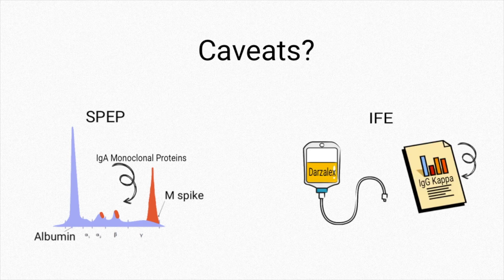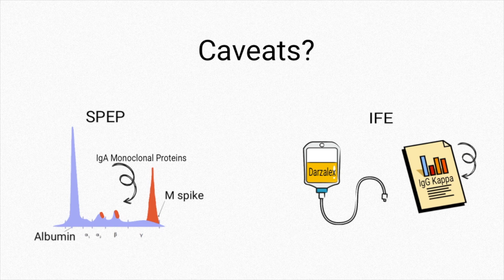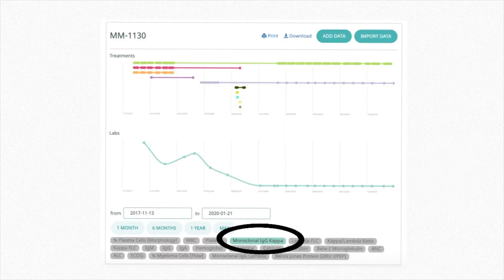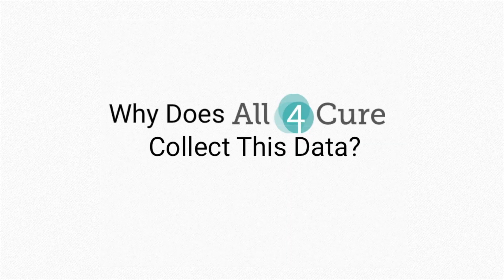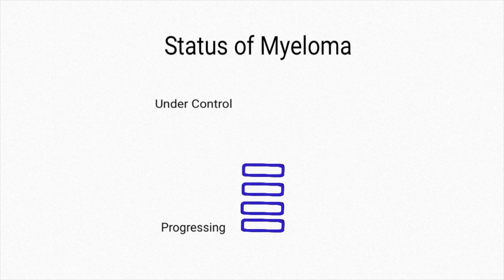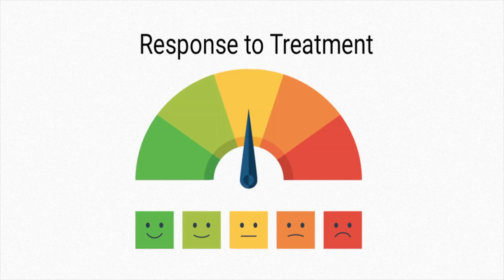Another caveat is that if a patient is taking Darzalex, IgG kappa can show up on their IFE results, even if they have a complete response. All of these values are actually recorded on the All4Cure dashboards. This helps show the status of someone's disease, and it also shows the response to a treatment.